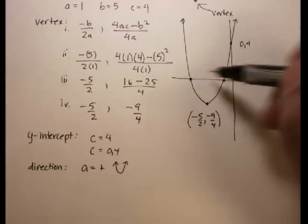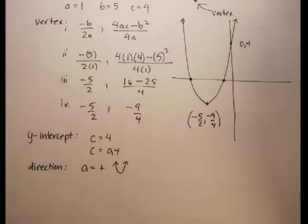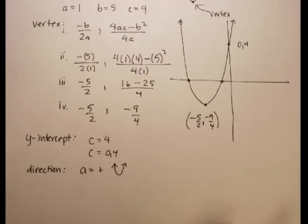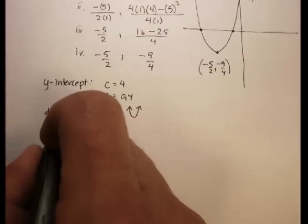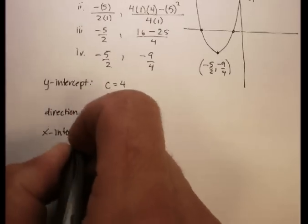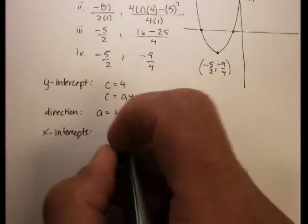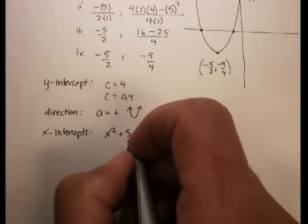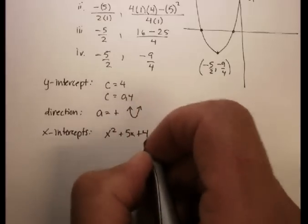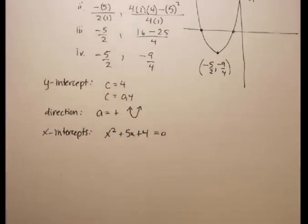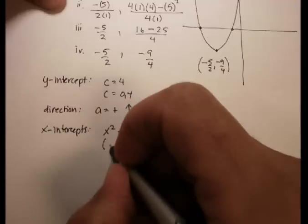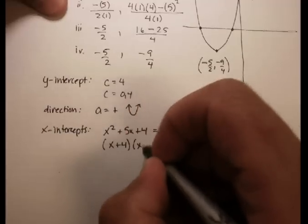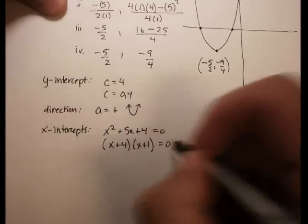Now I'm going to notice that both of the x values are going to be negative. Let's see how I can actually solve that. The way you solve for the x-intercepts, and let me just rewrite the equation again, is the first method is to actually see if you can factor your trinomial. And can I factor this one? Absolutely. I see that I can go x plus 4 times x plus 1 is equal to 0.